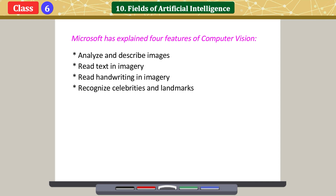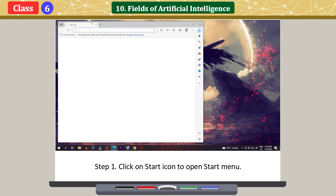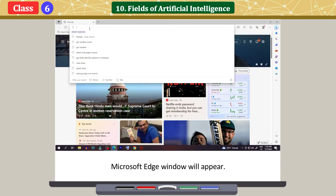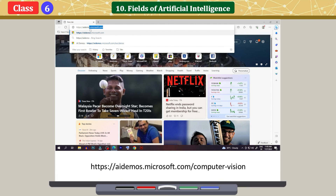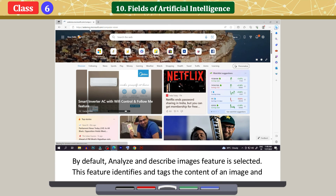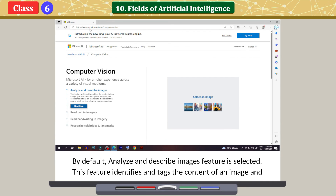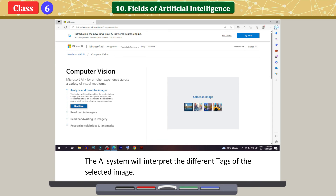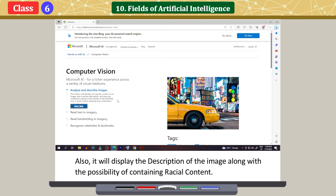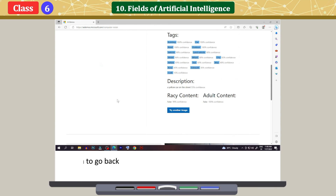The four features are: Analyze and describe images, Read text in imagery, Read handwriting in imagery, and Recognize celebrities and landmarks. Click on the Start icon to open the Start menu, then click on Microsoft Edge. In the address bar, type https://aidemos.microsoft.com/computer-vision and press Enter. By default, the Analyze and describe images feature is selected. This feature identifies and tags the content of an image and gives a written description. Select an image for analysis; the AI system will interpret the different tags of the selected image and display its description along with the possibility of containing racial content.